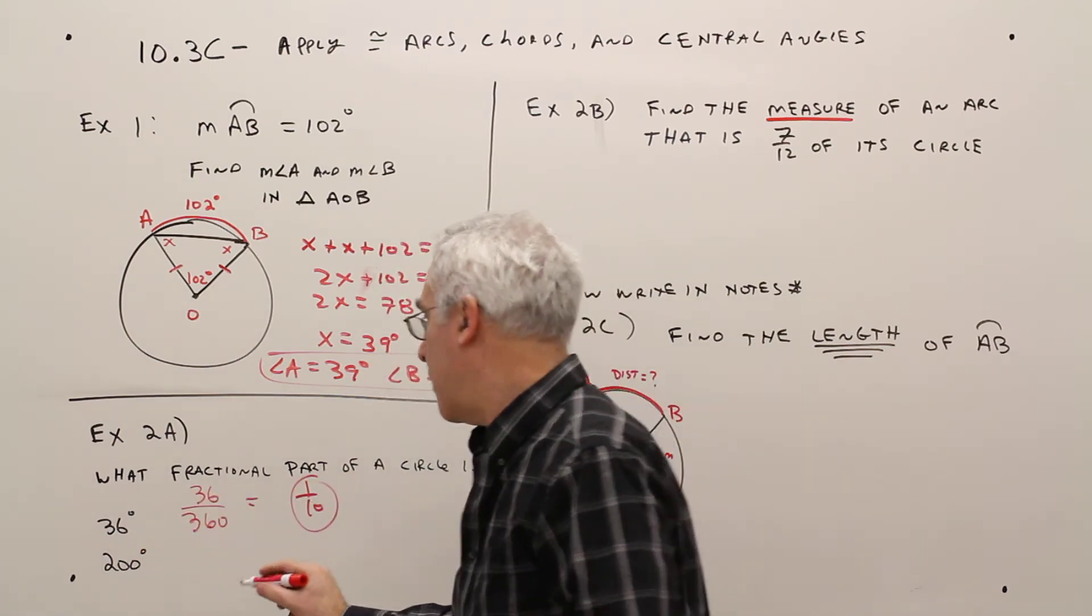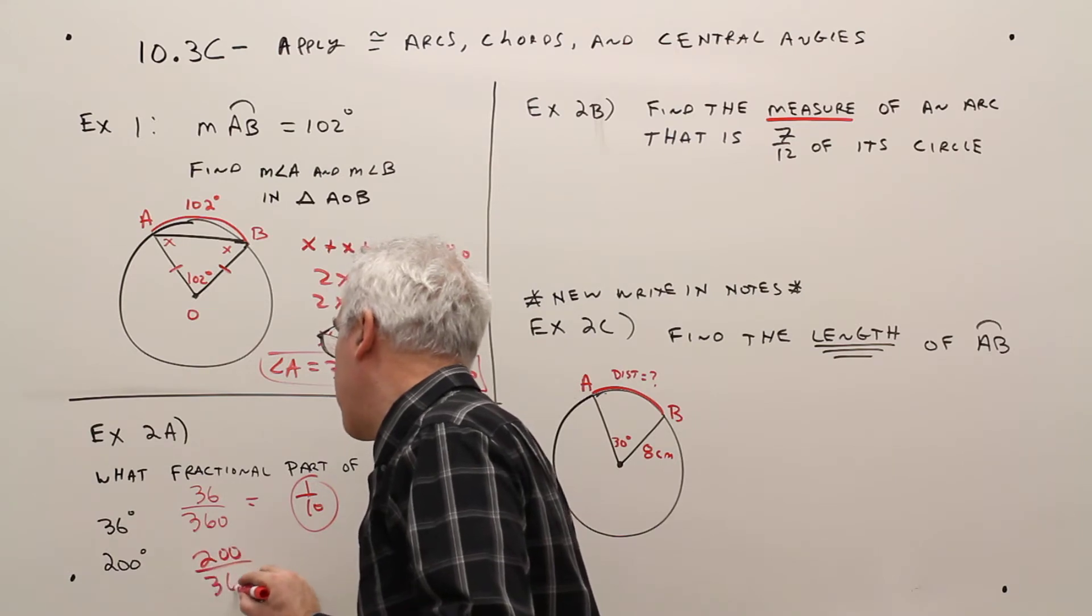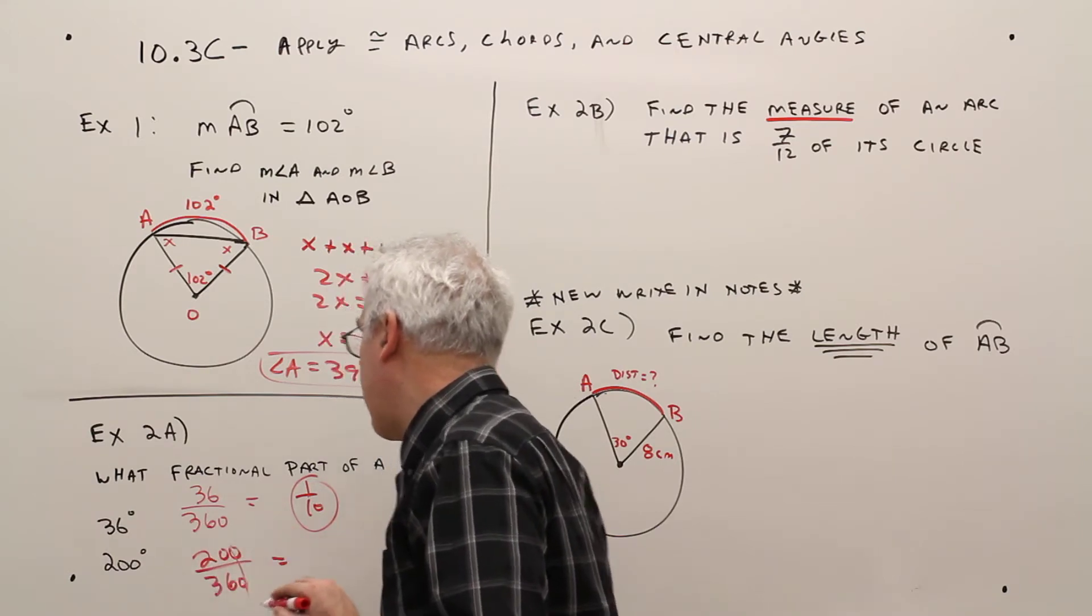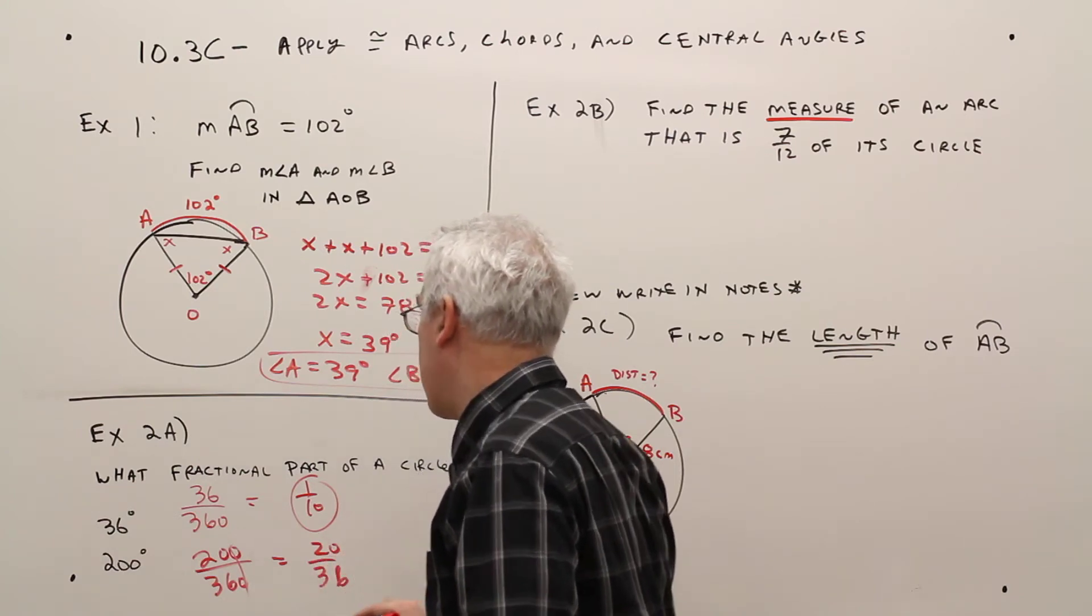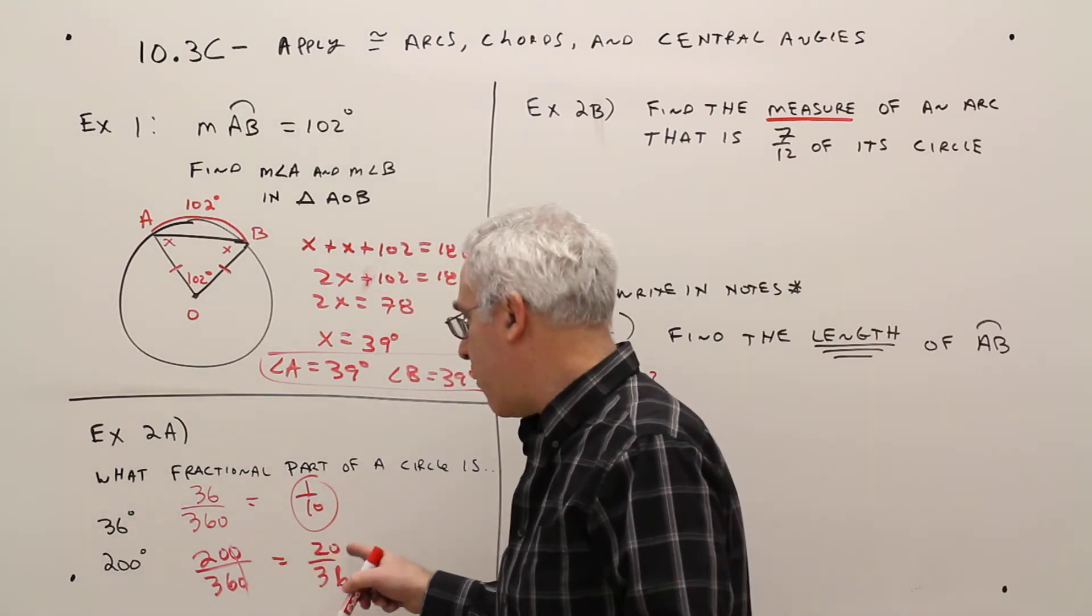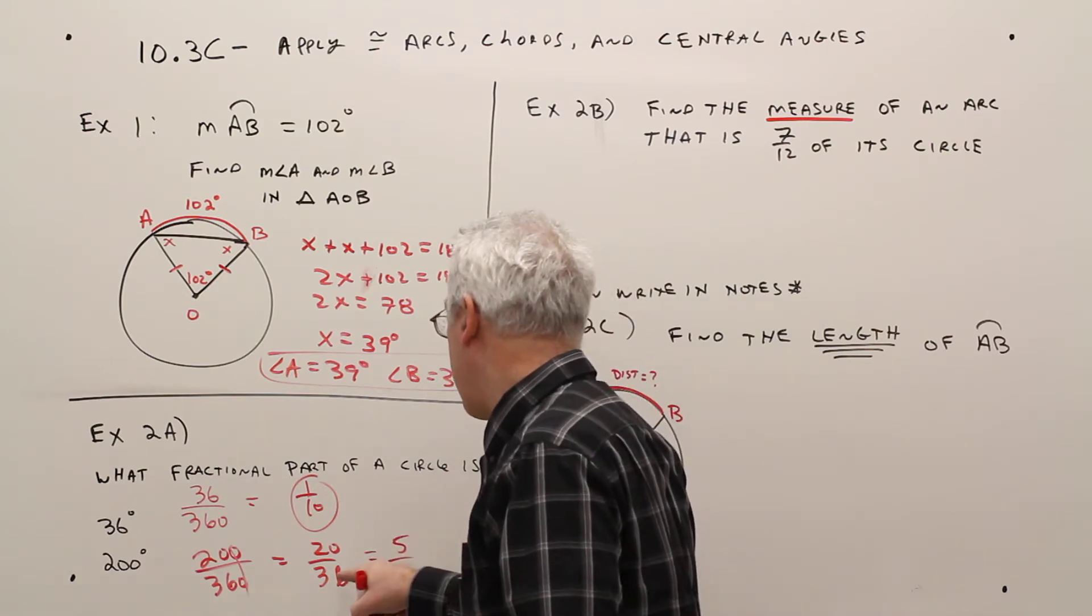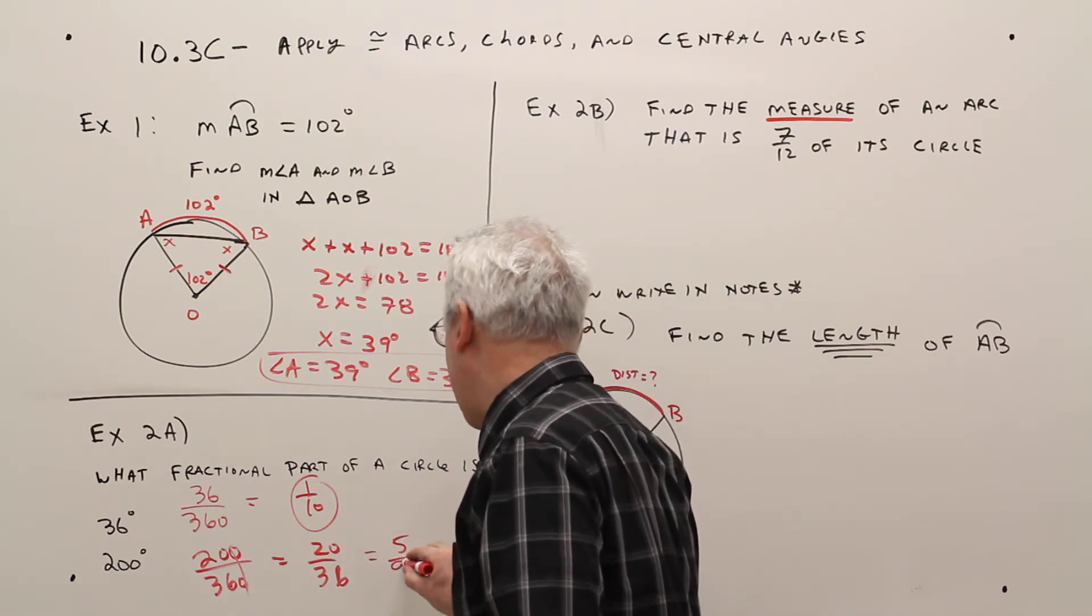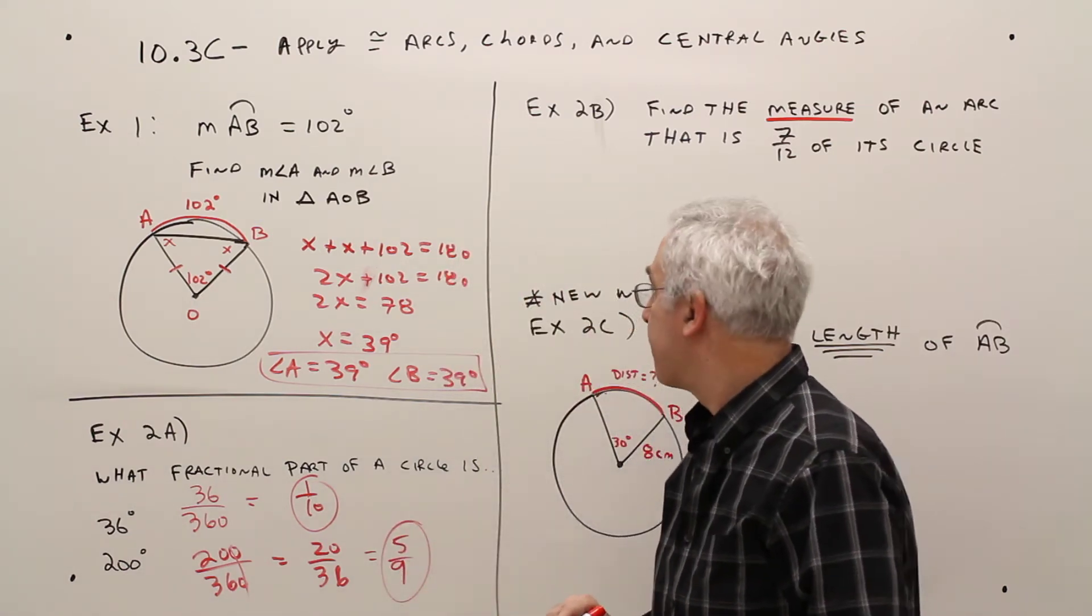For 200, that'll be 200 over 360. Cancel the zeros. 20 over 36. Divide through by 4, 5 times. Divide through by 4, 9 times. So we get 5 ninths.